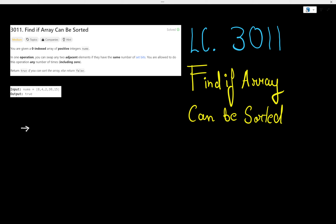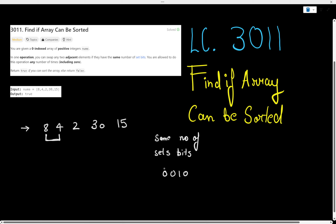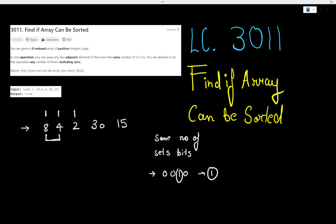What the problem is asking is that we are given nums array and we need to sort these numbers. But the thing is we can only swap these numbers when they have the same number of set bits. Set bits means the count of 1s in the binary representation of a number. For example, 8 has one set bit, 4 has one set bit, 2 has one set bit, 30 has four set bits, and 15 also has four set bits.